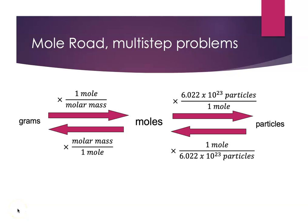Now let's talk about multi-step problems. We've done particles to moles and moles to particles, and also grams to moles and moles to grams. We can link these together: going from grams to moles to particles, or from particles to moles to grams. I just need to pay attention to units — the factor label method really helps set it up. Get out your calculator and periodic table.